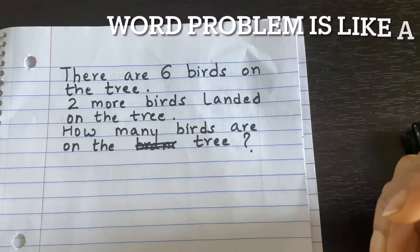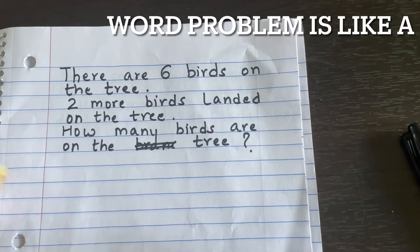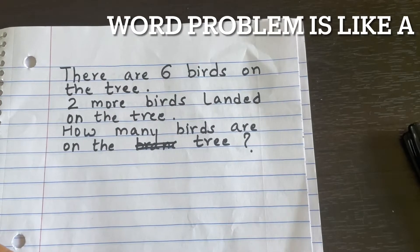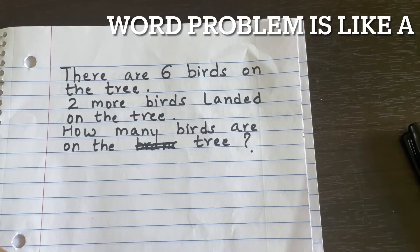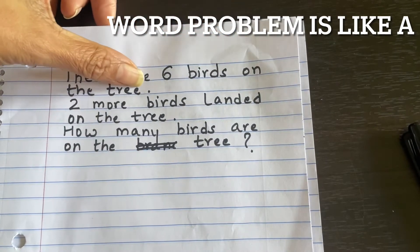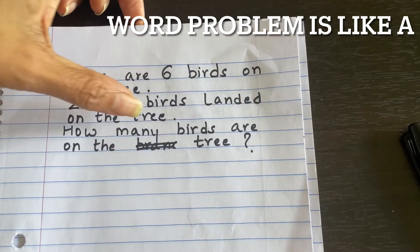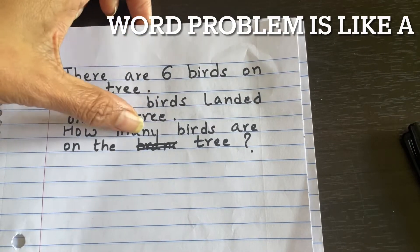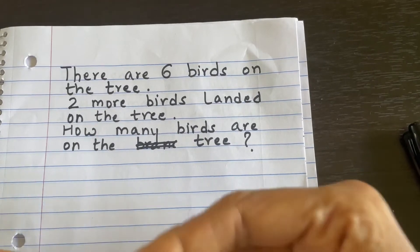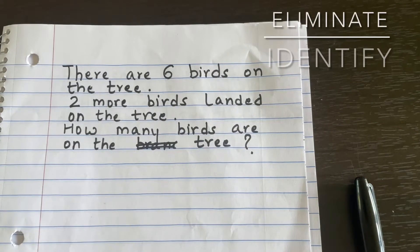Word problem is a story and how we decode this story is the whole idea behind word problems. When we see this clutter of words, first what we have to do is read it. There are six birds on the tree, two more birds landed on the tree, how many birds are on the tree? Your child should be able to know the meaning of each word first.